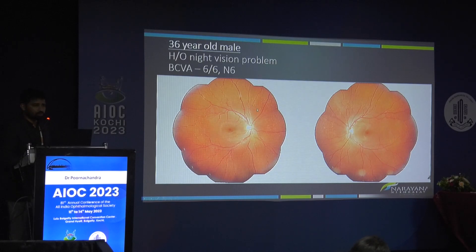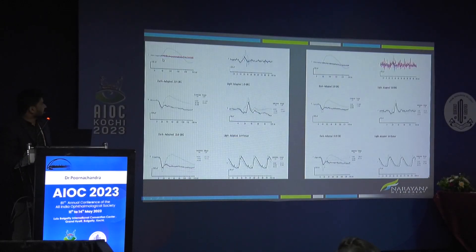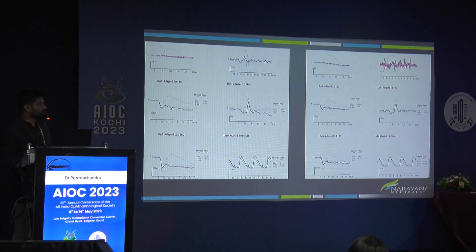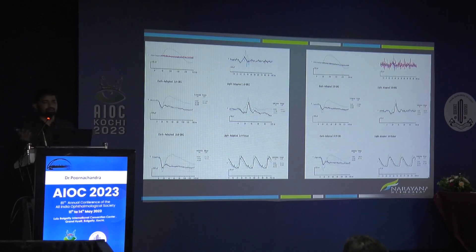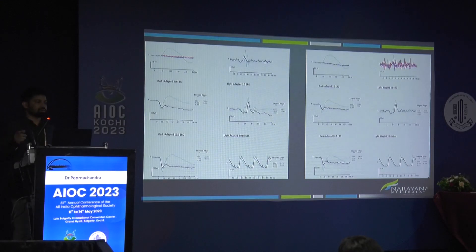Another patient, a 36-year-old, also with 6/6 vision, had multiple fleck-like deposits throughout the fundus, similar in appearance to the previous case, but this patient had night vision problems. OCT was normal. ERG showed a classical electronegative ERG: the A wave formed normally but the B wave did not reach baseline. This indicates inner retinal dysfunction. Electronegative ERG can occur in conditions like CRVO where the outer retina is intact but inner retinal function is compromised.